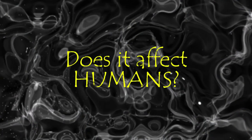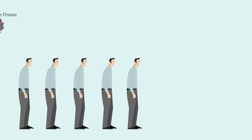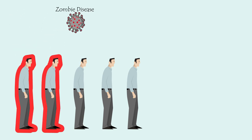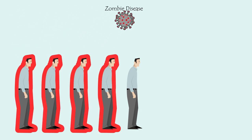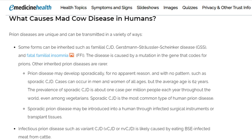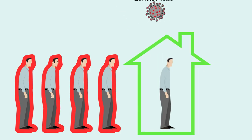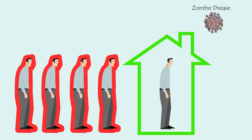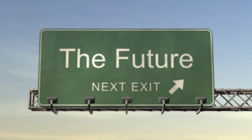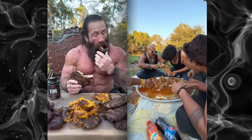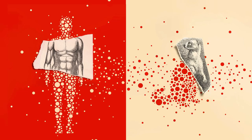Does it affect humans? Zombie deer disease could spread from animals to humans, just like mad cow disease did in the 1990s. There is no evidence of human infection so far, but it could happen in the future if people consume infected meat or come into contact with infected animals.